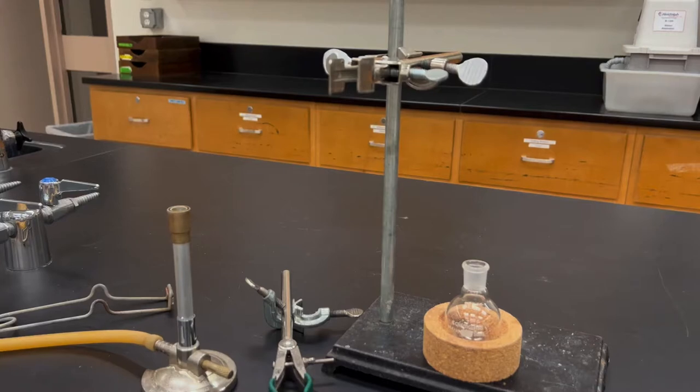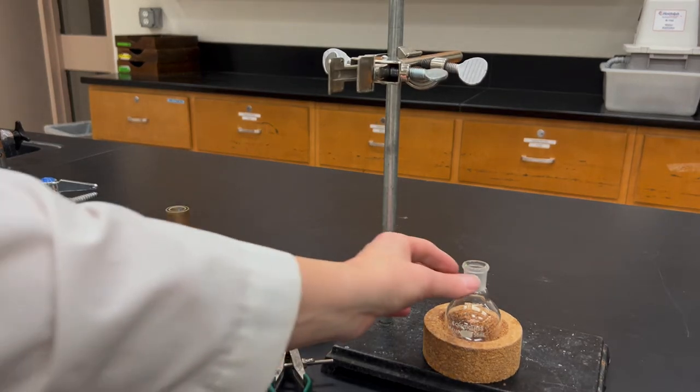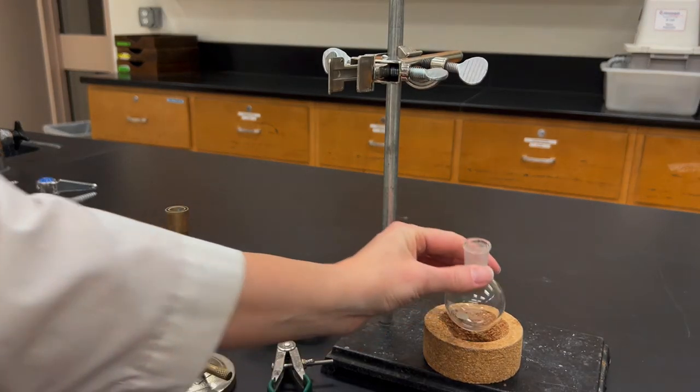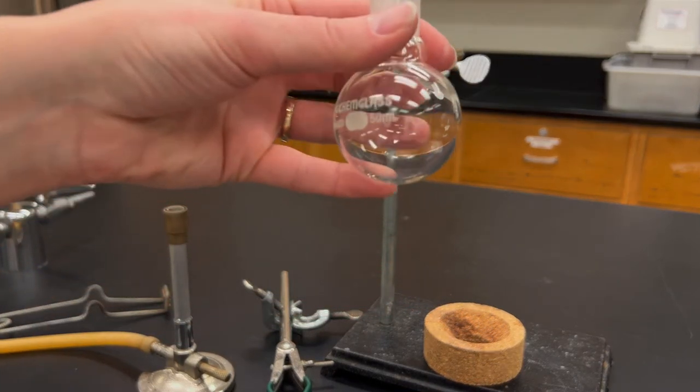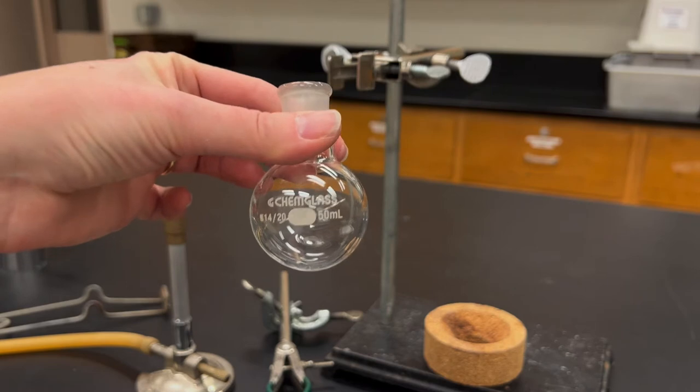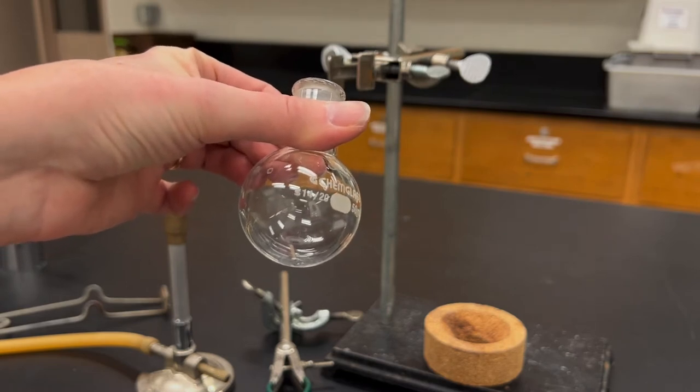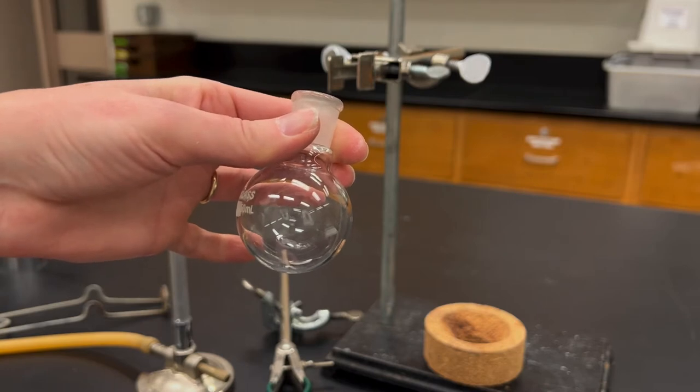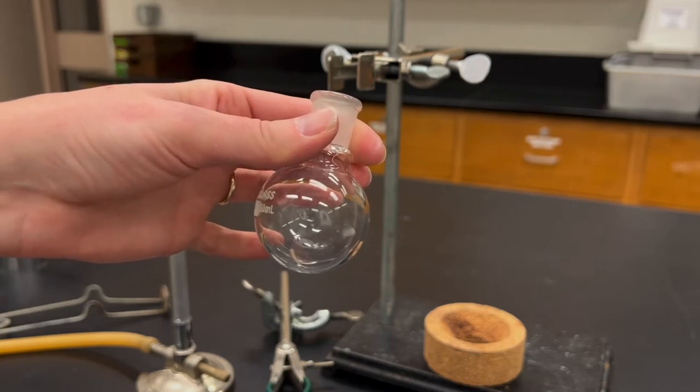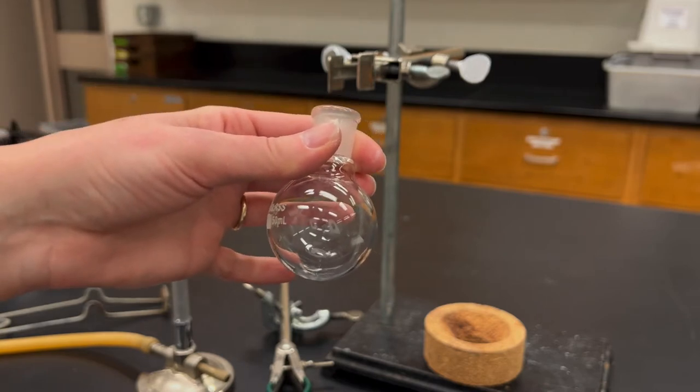Next I want to get my flask ready. If we're trying to exclude water from a reaction we do have to take into account that glass is quite polar and actually has a surface coating of adsorbed water. So we need to remove that. Options are you could either have your flask heated overnight in an oven to boil away that water, or you could flame dry it. And so I'm going to show you how to flame dry a flask.